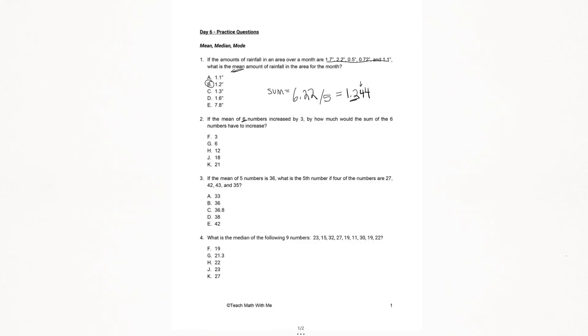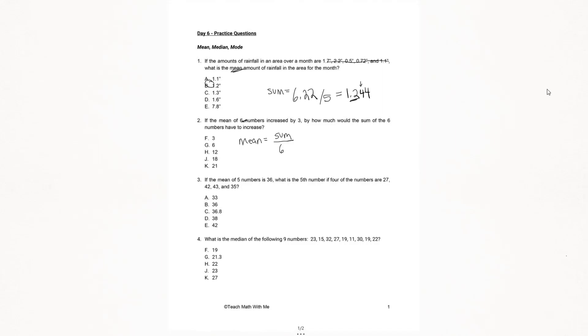Let's look at what they've given us. They say if the mean of six numbers increased by three. So when we're using the definition of mean, mean is equal to the sum of those numbers divided by however many numbers you have. In this case, we have six. So when I want to choose an example to use, I want to choose something that's divisible by six. Let's take a number, let's say 36.